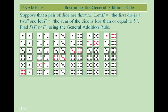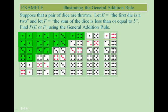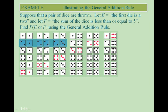Example illustrating the general addition rule: suppose a pair of dice are thrown. Let event E be that the first die is a 2, and let event F be that the sum of the dice is less than or equal to 5. We want to find P(E or F) using the general addition rule. A picture shows all possible outcomes, with E outcomes and F outcomes highlighted — notice there is some overlap.